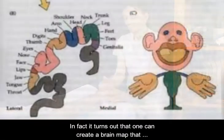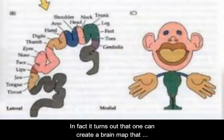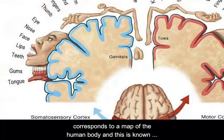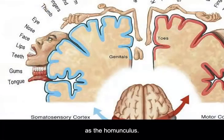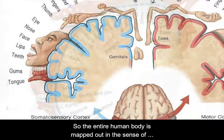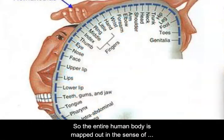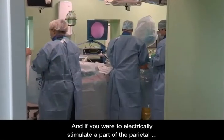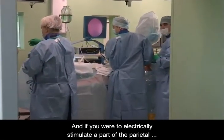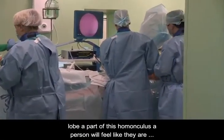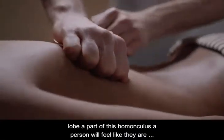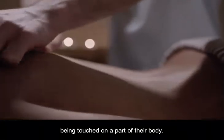In fact, it turns out that one can create a brain map that corresponds to a map of the human body, and this is known as the homunculus. So the entire human body is mapped out in terms of sense of touch to the parietal lobe. And if you were to electrically stimulate a part of the parietal lobe — a part of this homunculus — a person will feel like they are being touched on a part of their body.